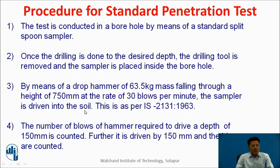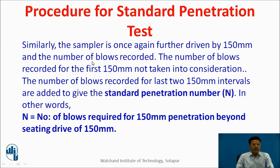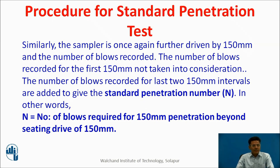This procedure follows Indian Standard IS 2131-1963. The number of blows required to drive the sampler a depth of 150 mm is counted; it is then driven a further 150 mm and blows N are counted, then again a further 150 mm and blows are recorded. The number of blows for the first 150 mm are not taken into consideration; blows for the next two 150 mm intervals are added to give the standard penetration number N. In other words, N is the number of blows required for 150 mm penetration beyond the seating drive of 150 mm.